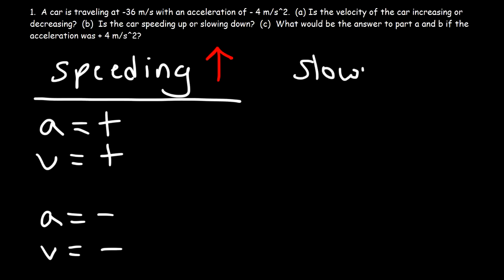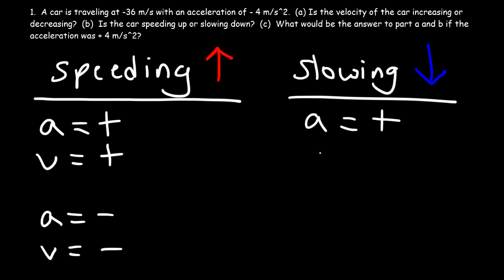The vehicle is slowing down if the signs of acceleration and velocity are different. So if acceleration is positive and velocity is negative, it's slowing down. Or if the acceleration is negative and velocity is positive, it's slowing down.